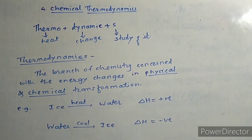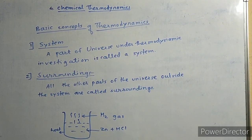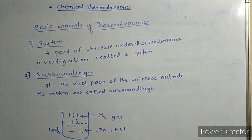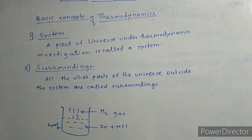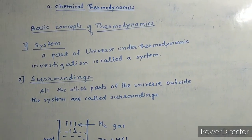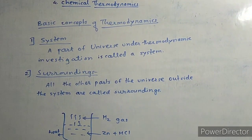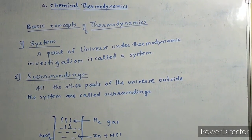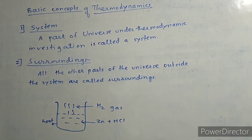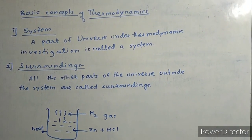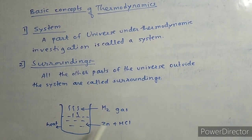To study thermodynamics we need some basic concepts. The two basic concepts are system and surroundings. A part of the universe under thermodynamic investigation is called the system. All the other parts of the universe outside the system are called the surroundings. For example, in a reaction where Zn plus HCl takes place, the part where Zn and HCl are present is the system.